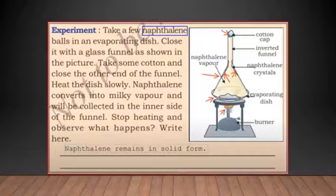You can watch videos of such experiments. Close it with a glass funnel as shown in the picture. Take some cotton and close the other end of the funnel. Heat the dish slowly. Please don't heat very fast. Naphthalene converts into milky vapor and will be collected in the inner side of the funnel. Stop heating and observe what happens. Naphthalene remains in the solid form.